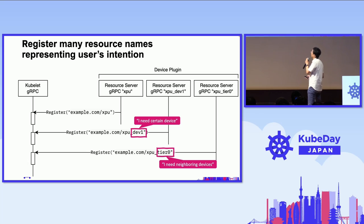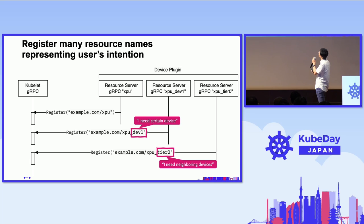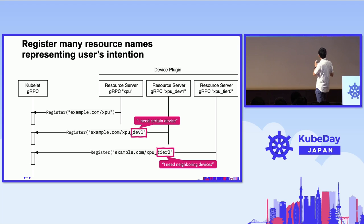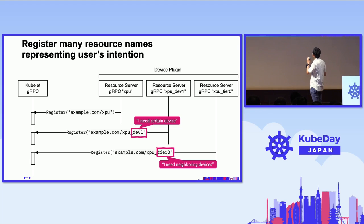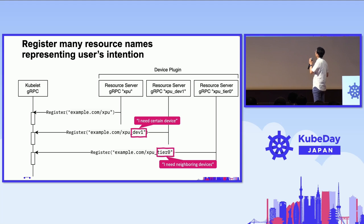This sequence diagram shows the registration process. We have one device plugin but multiple resource servers — each resource server represents one resource name. In the standard approach only XPU exists, but with our approach there are multiple resource servers: XPU_dev1, XPU_dev2, XPU_dev3, XPU_dev4, and XPU_tier0, which represents an allocation policy. With these additional resource servers, users can specify their requirements as a resource name — I need this specific device, or I need two nearby devices.